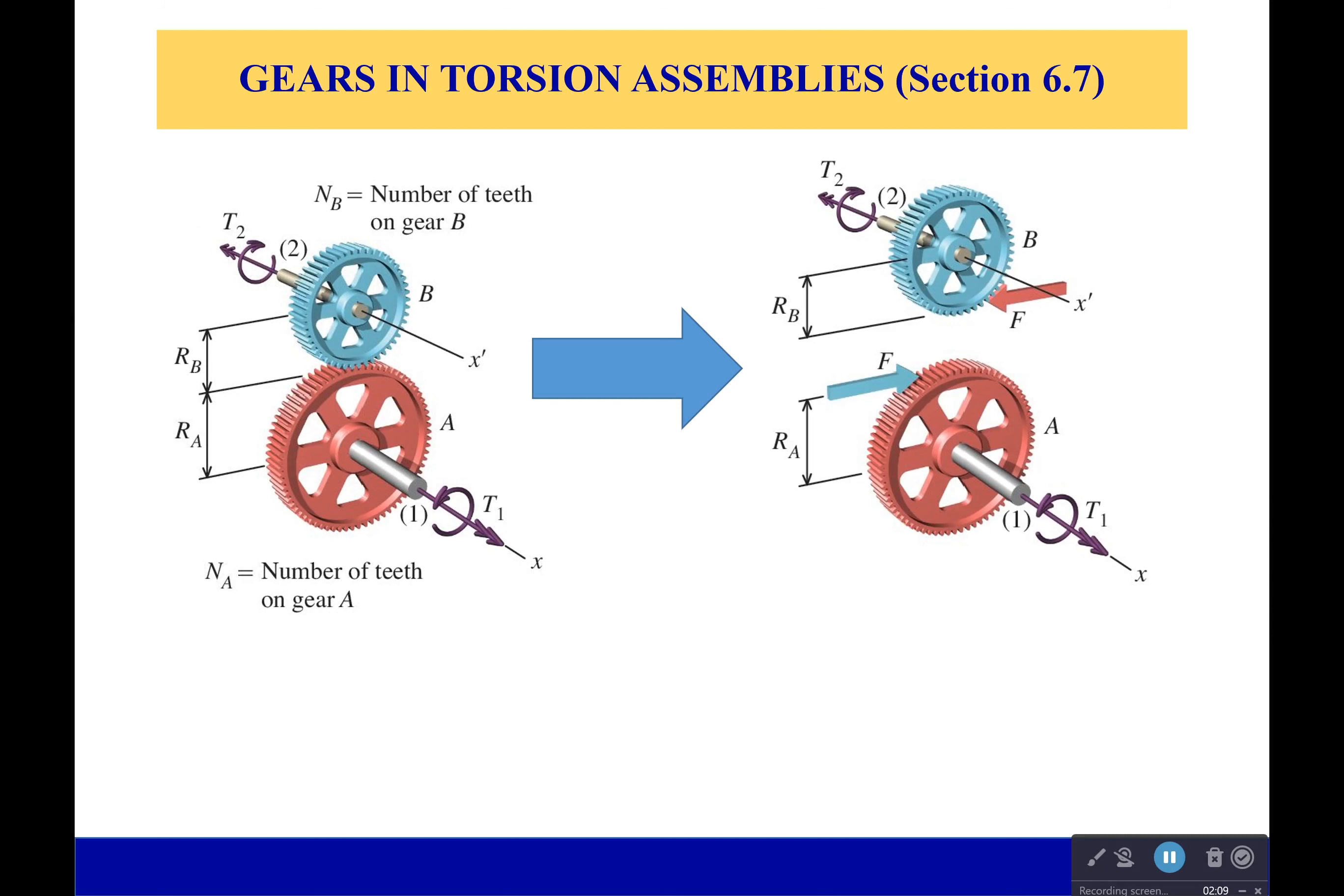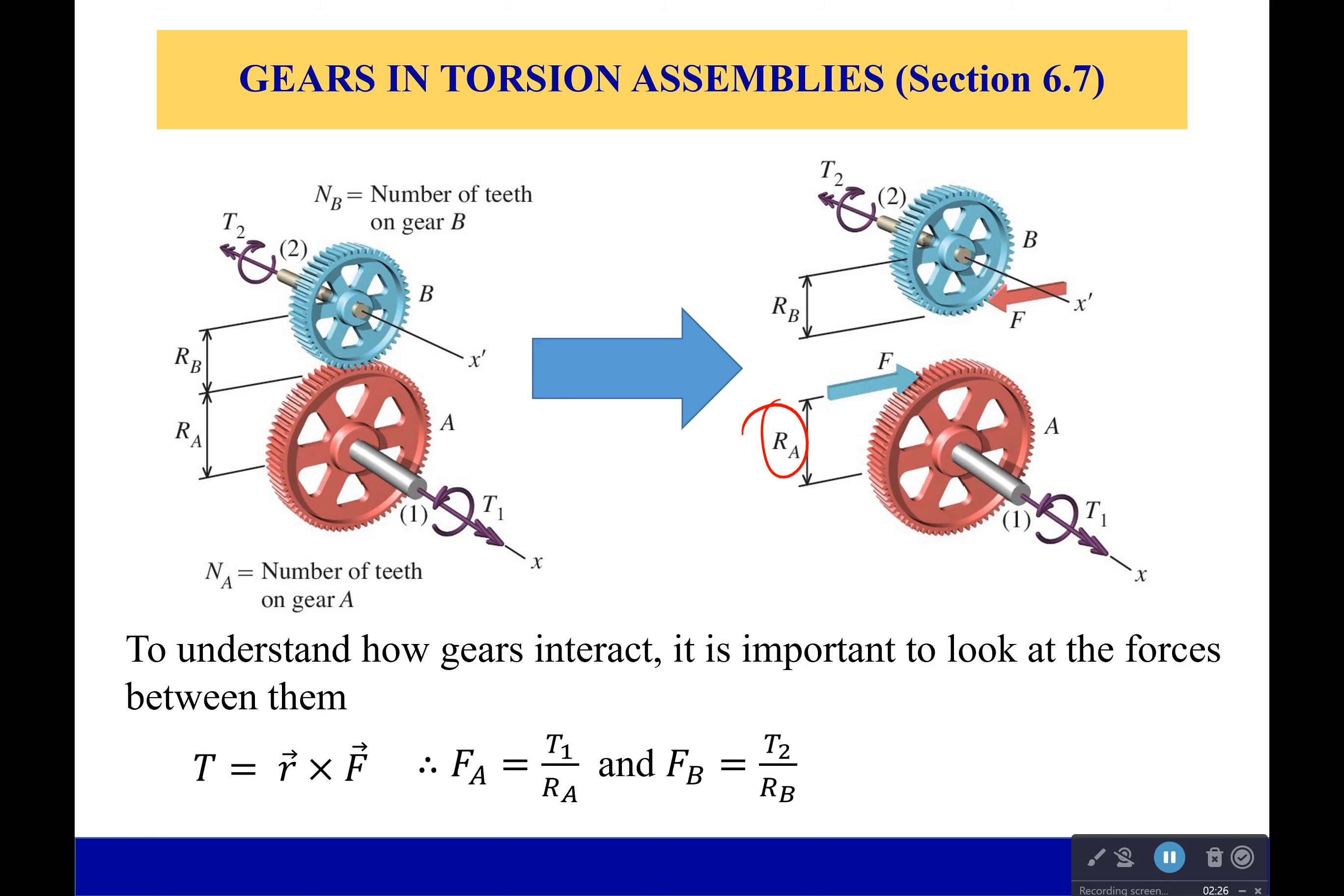So to study it we're going to break them apart and look at the forces that are connecting these two gears. We know that torque is a position vector, so the distance in this case the radius crossed with the force. And so from that we could actually calculate force A right here and force B which would simply be their torques divided by their radius. Now because this is an equilibrium, these two forces have to be the same. And so we can get this nice little ratio that torque 2 would be equal to the ratio of the radiuses times torque 1.